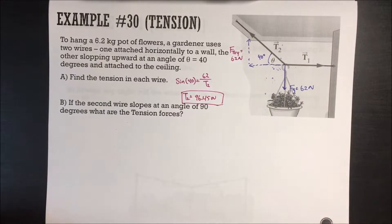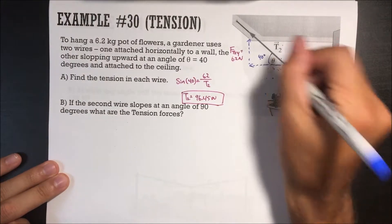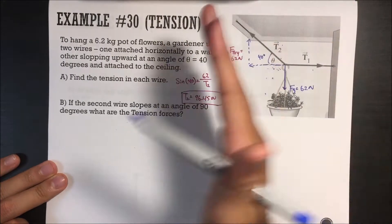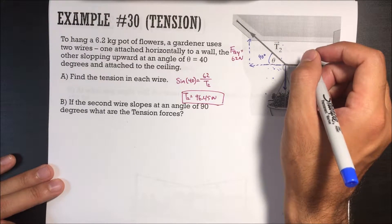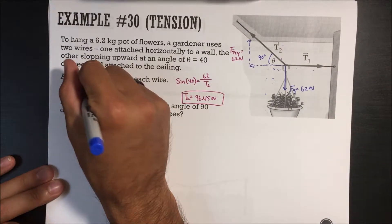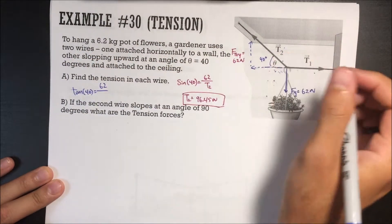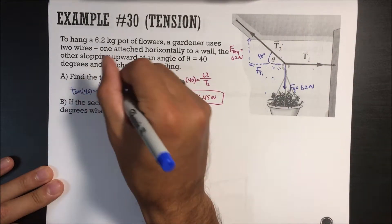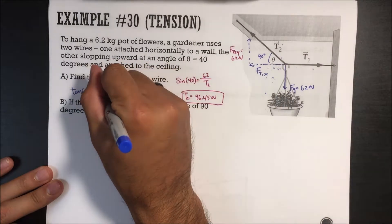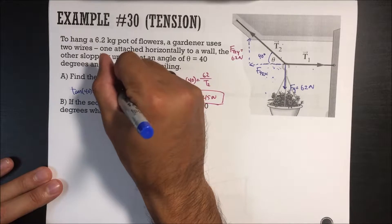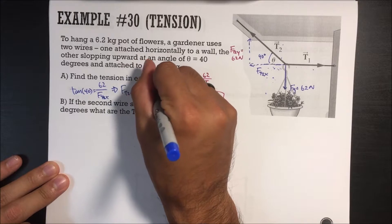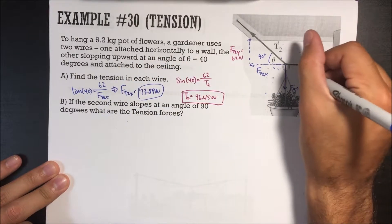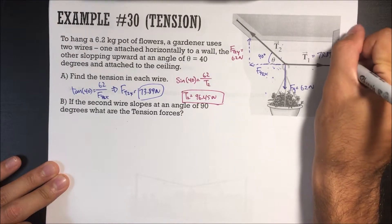For tension 1, since the object isn't moving in the x direction, the forces in x must cancel out — and these are the only two in the x direction. Using tangent: tan of 40 equals opposite over adjacent, so tan(40) equals 62 over the x-component of tension 2. Solving, the x-component of tension 2 equals 62 divided by tan(40), which is 73.89 newtons. Since the horizontal wire only acts in the x direction, tension 1 equals 73.89 newtons.